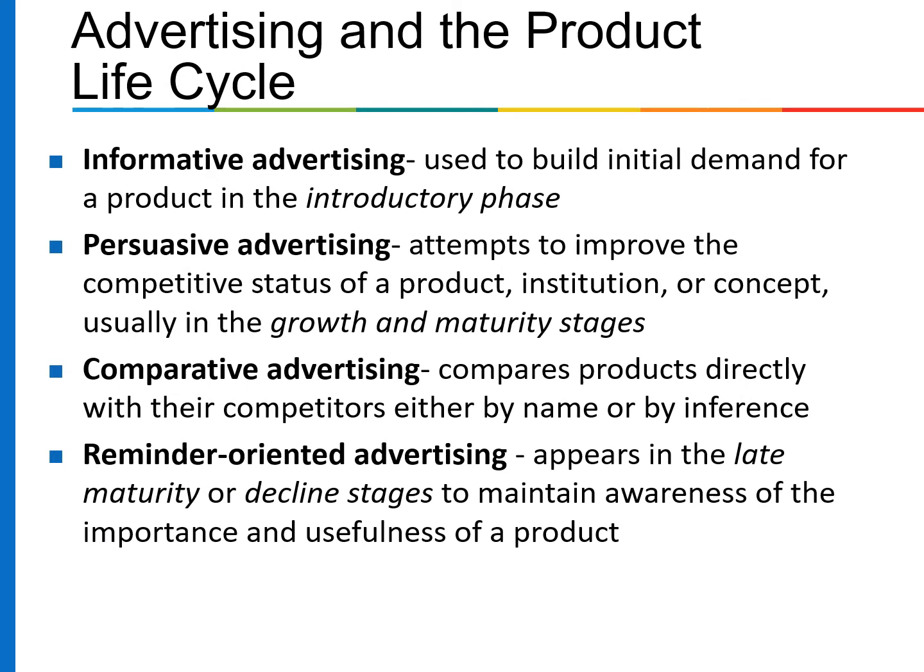Firms use different types of advertising during the different phases of the product life cycle. The main goal of advertising is to inform, persuade, or remind, but this differs across various stages. Informative advertising is used to build initial demand in the introductory phase. Persuasive advertising attempts to improve the competitive status of a product, institution, or concept, usually in the growth and maturity stages. Comparative advertising compares products directly with their competitors, either by name or by inference. Reminder-oriented advertising appears in the late maturity or decline stages to maintain awareness of the importance and usefulness of a product.